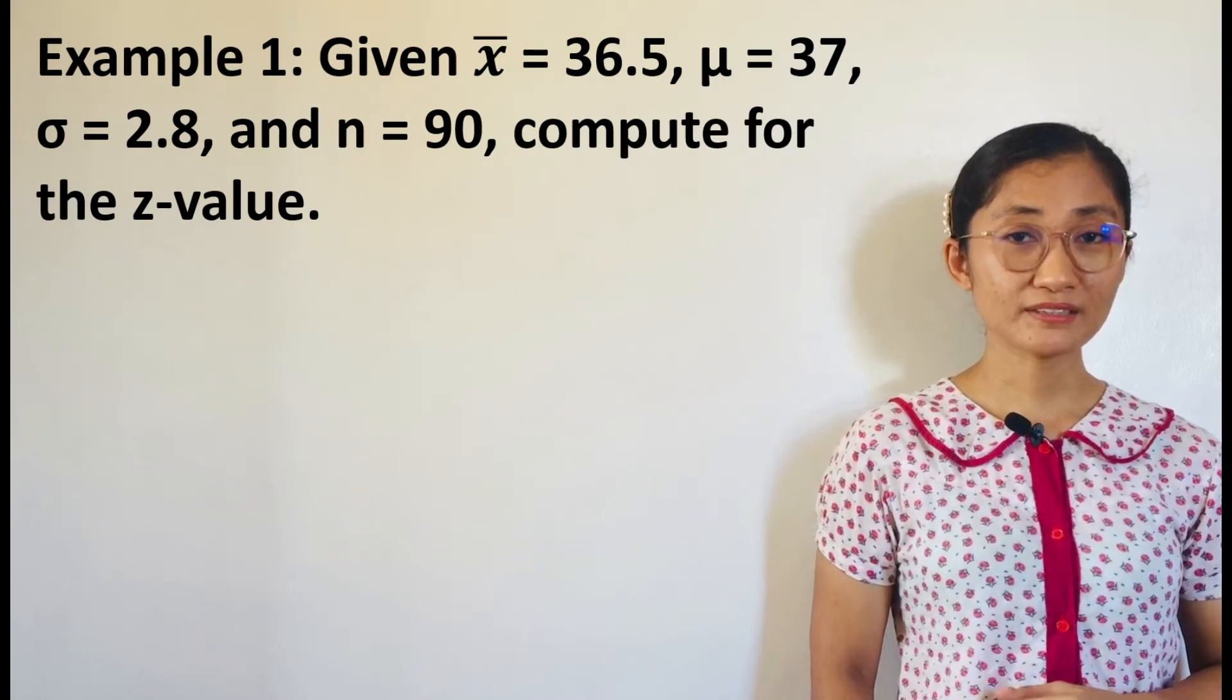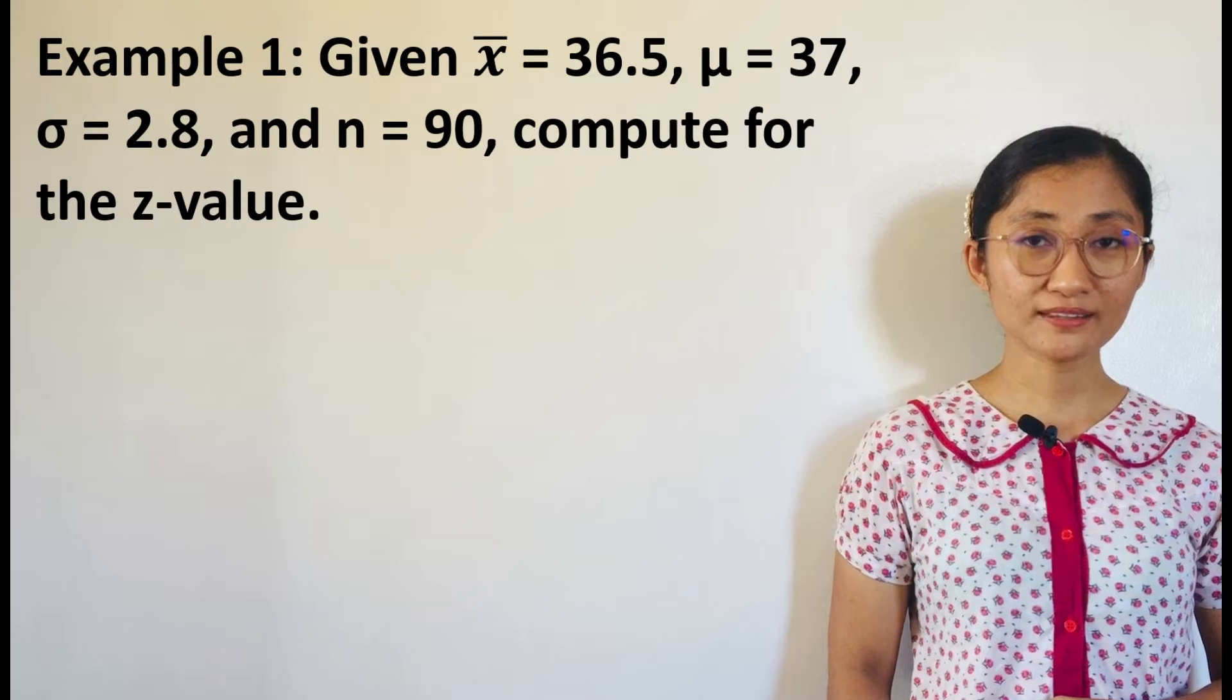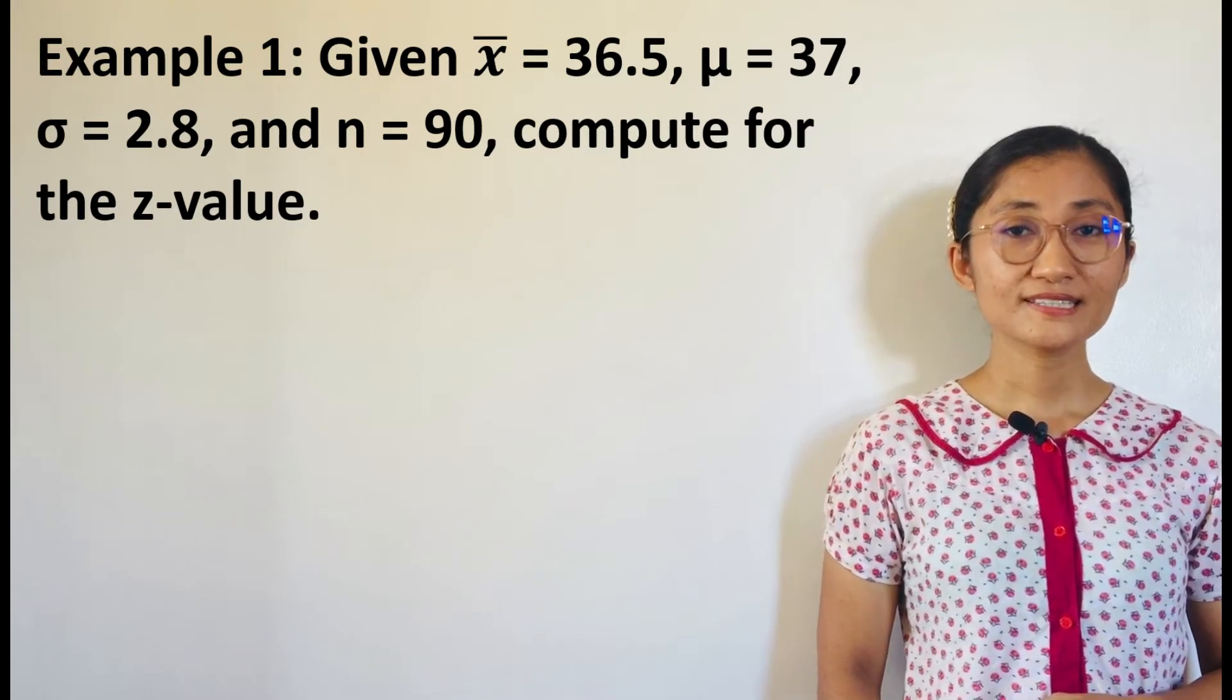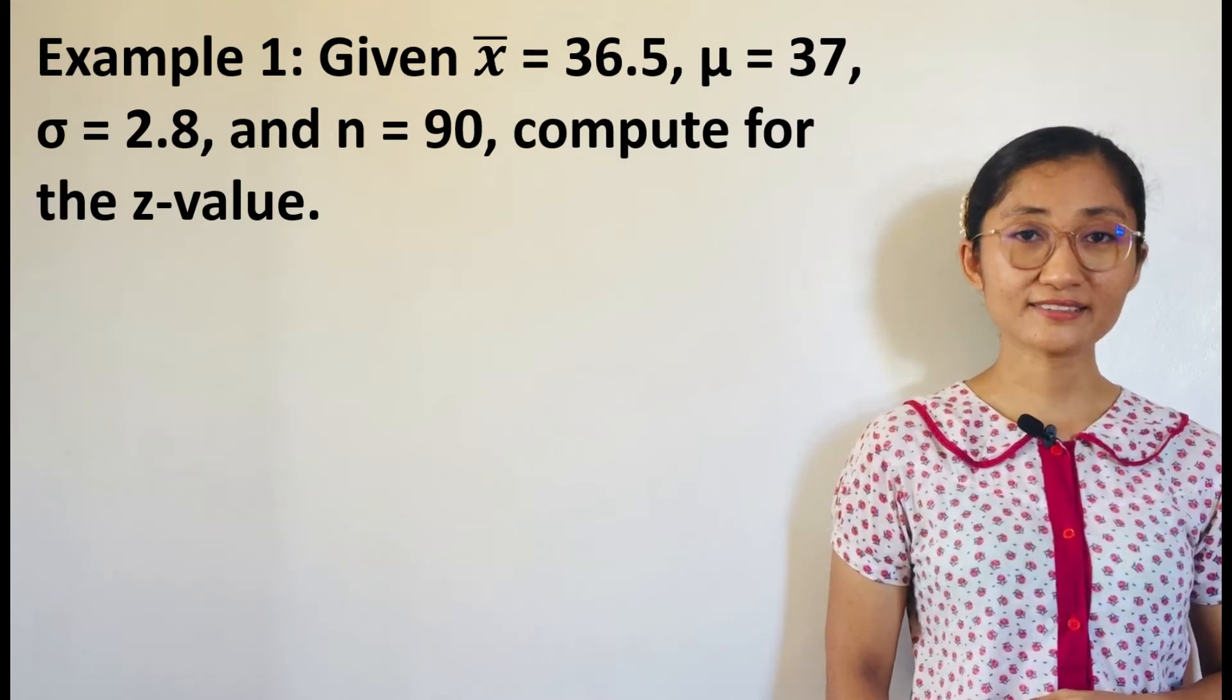Example 1: Given the sample mean equals 36.5, population mean equals 37, population standard deviation 2.8, and sample size 90, compute for the Z-value.